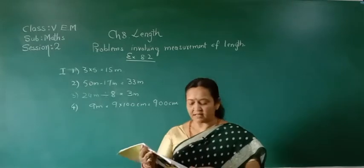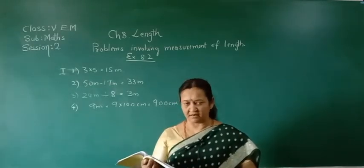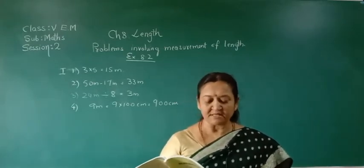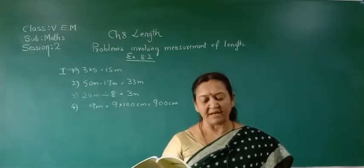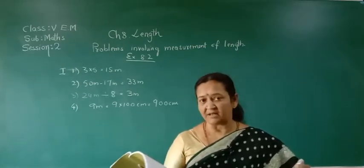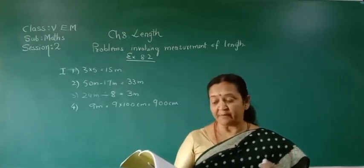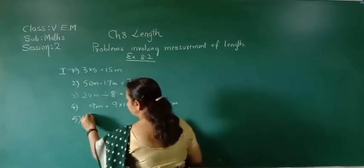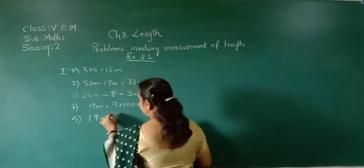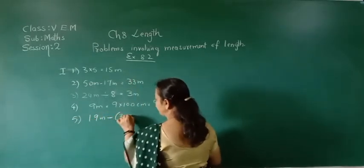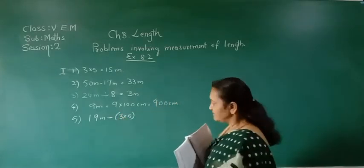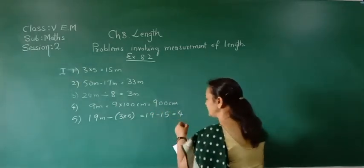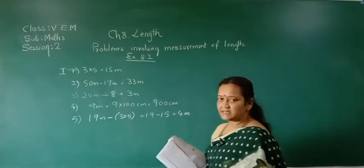The last 5th question: The length of a wooden plank is 19 meters. Out of this, 5 pieces of 3 meters each are cut off. Find the length of the remaining piece. Out of 19 meters, subtract 3 times 5. That is 19 minus 15. 5 times 3 is 15. How much is remaining? 4 meters. Remaining is 4 meters.